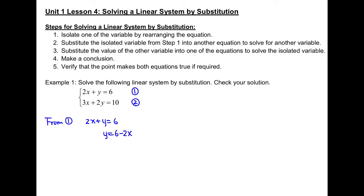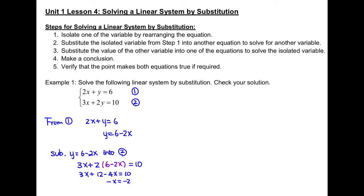Step 2: substitute the isolated variable from step 1 into another equation to solve for the other variable. We substitute y equals 6 minus 2x into equation 2. We get 3x plus 2 times (6 minus 2x) equals 10. Expand and simplify. We get x equals 2.